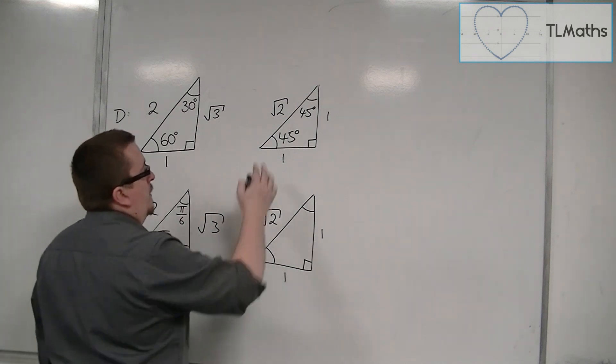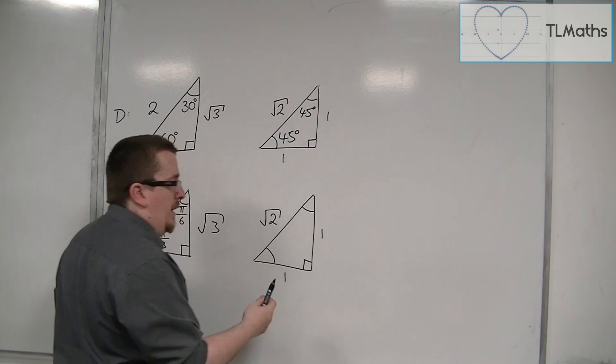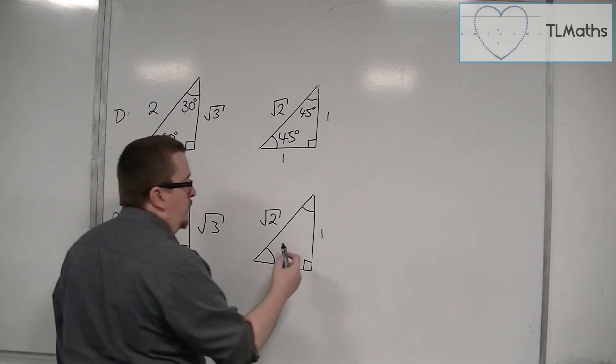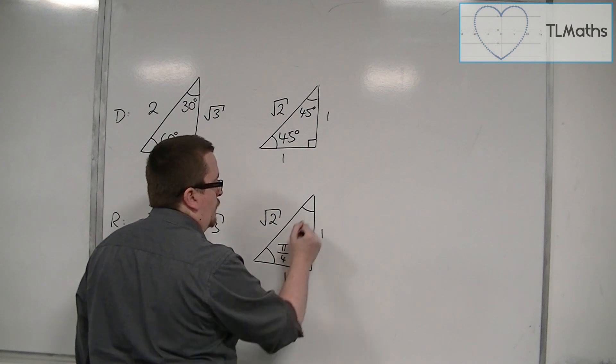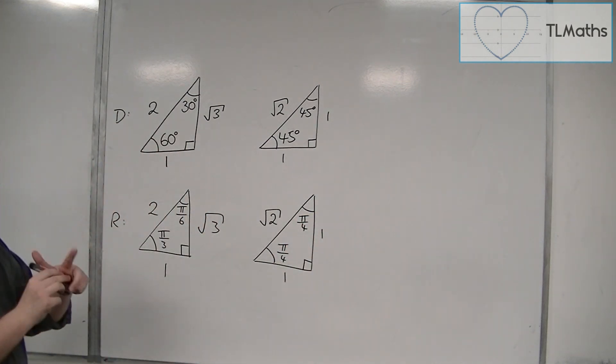And 45 degrees is, well, pi is 180, so pi over 2 is 90, so pi by 4 is 45 degrees.